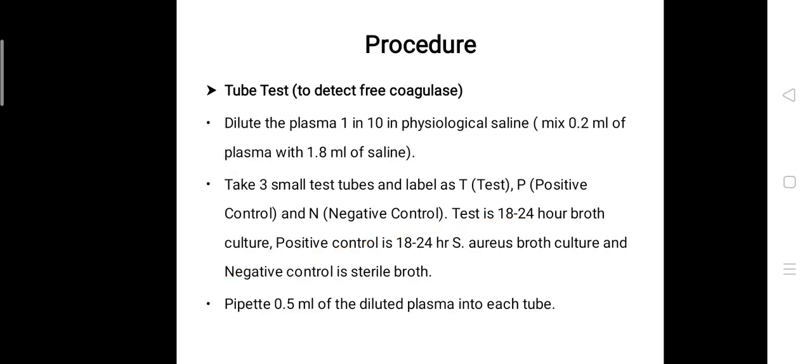Now we will discuss the tube test. For the tube test, you are going to need three test tubes. First, dilute the plasma 1:10 in normal saline. Take three small test tubes and label as T (test), P (positive control), and N (negative control). The test should be from 18 to 24 hour broth culture. The positive control should be from 18 to 24 hour Staphylococcus aureus broth culture, and negative control is sterile broth.